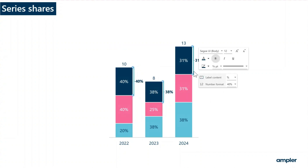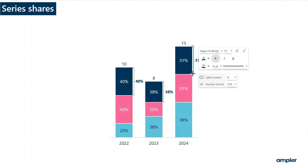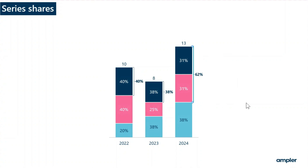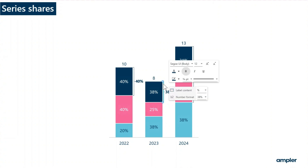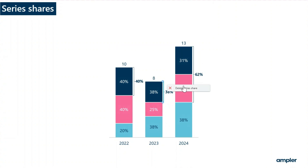Initially, all series shares are selected. To select only one, click one more time on the desired series share and now only this one is selected. Remove unwanted series shares by selecting them and hitting delete on the keyboard or from the context menu. Series shares can also be inserted by selecting specific segments before adding them.